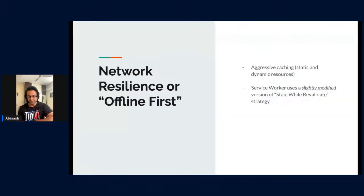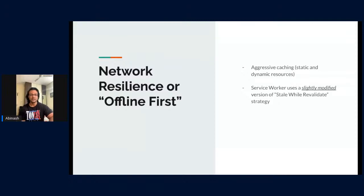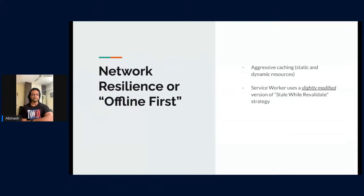Let's start with the first topic: network resilience. For offline-first, we are pretty aggressive when it comes to caching — whether static resources or dynamic resources like API data. We also use a slightly modified version of the stale-while-revalidate strategy. This combination basically provides the aggressive offline-first experience we can give to our users.